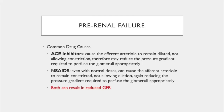Common drug causes of pre-renal failure are ACE inhibitors and NSAIDs, both resulting in reduced GFR. ACE inhibitors cause the efferent arteriole to remain dilated, reducing the pressure gradient required for appropriate glomerular perfusion — blood passes through too quickly. NSAIDs cause the afferent arteriole to remain constricted, also reducing the pressure gradient — not enough blood reaches the glomerulus, and what does arrives too quickly due to the dilated efferent arteriole. NSAIDs and ACE inhibitors are particularly harmful in pre-renal states.